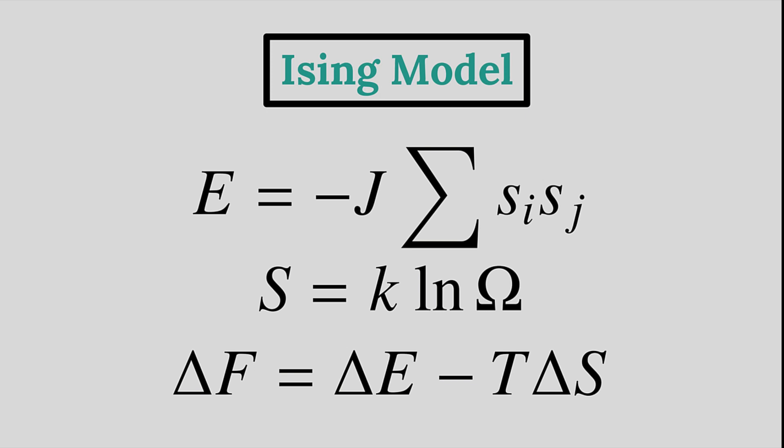Peirels' argument from 1936 relies on finding the change in the Helmholtz free energy caused by the creation of a domain. To look through the argument, we are going to define a domain and then find our two protagonists, delta E and delta S.